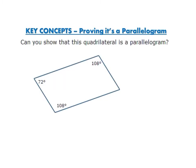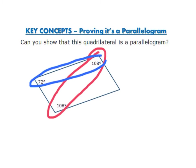Can you show that this quadrilateral is a parallelogram? We have opposite angles that are both 108 degrees. We also already found that consecutive angle pairs are supplementary. So yes, we can prove once again that this quadrilateral is a parallelogram.